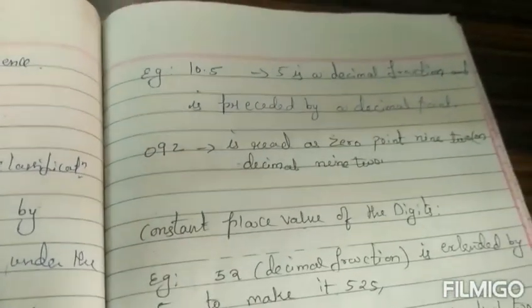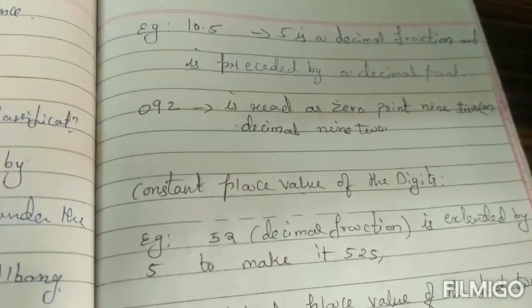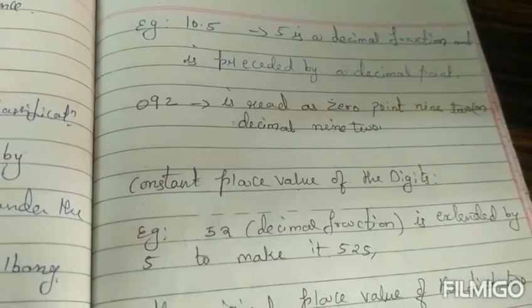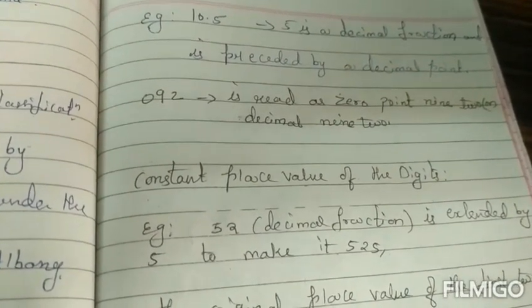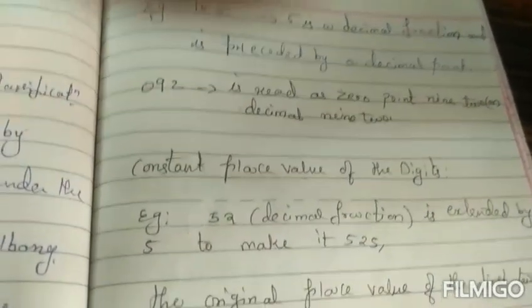For example, 10.5 is read as 5 is a decimal fraction preceded by a decimal point, and 092 is read as 092 or decimal 92. And the constant place values of the digits are maintained.